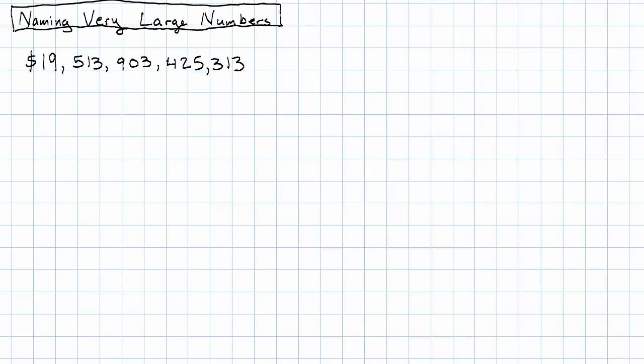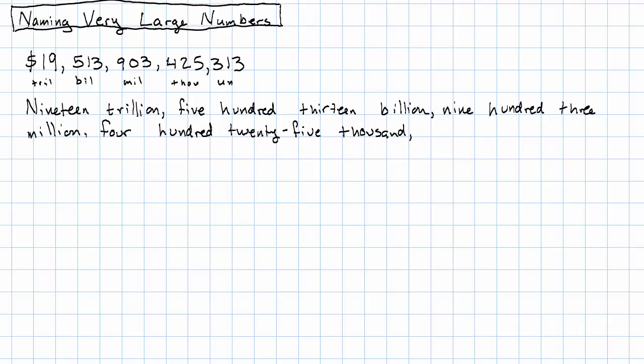In order to say the name of this number, I'm going to need to mark the groups here. I've got units, thousands, millions, billions, and trillions. So the name of this number is nineteen trillion, five hundred thirteen billion, nine hundred three million, four hundred twenty-five thousand, three hundred thirteen.